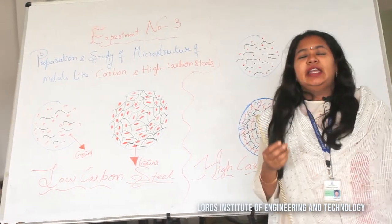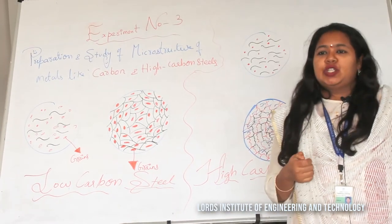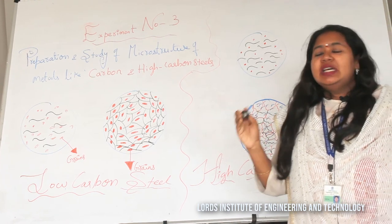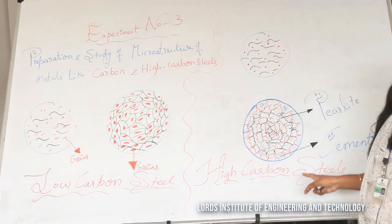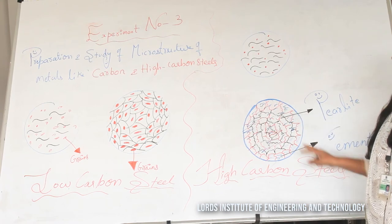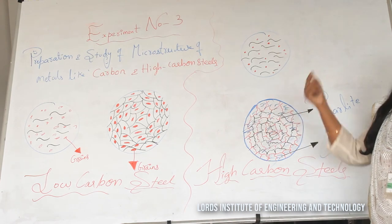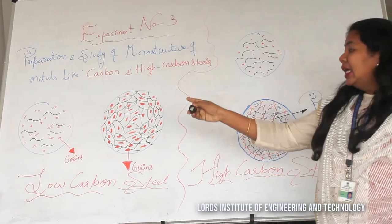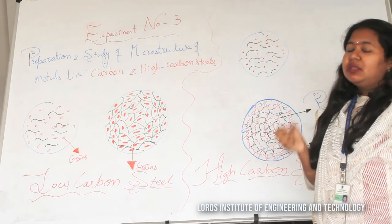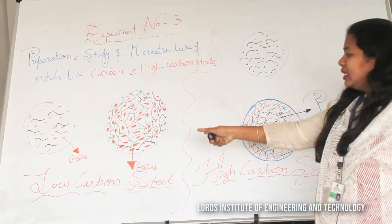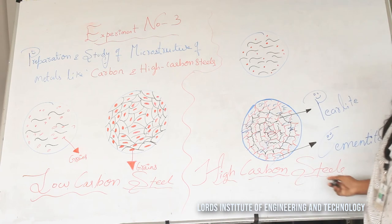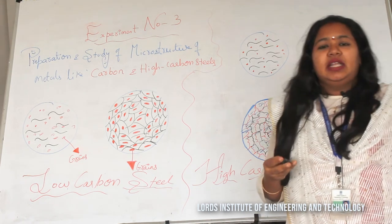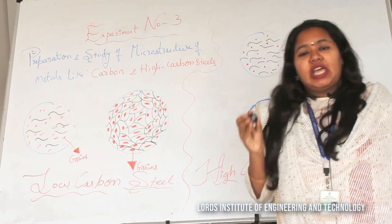We have seen the microstructure of carbon steel and high carbon steel. I have drawn two different diagrams for each. The first diagram shows the microstructure before etching — before applying the etchant. After etching, the clear and fine microstructure of low carbon steel appears, where the structures are called grains and the lines are called grain boundary lines. Similarly, for high carbon steel, we have the before-etching and after-etching views. I hope you all understood regarding the microstructure of low carbon steels and high carbon steels. Thank you for listening.